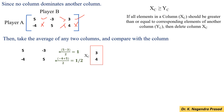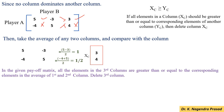Here, 3 is greater than 1 and 4 is greater than 1/2. So, in the given payoff matrix, all the elements in the 3rd column are greater than or equal to the corresponding elements in the average of the 1st and 2nd columns. Then, we have to delete the 3rd column.